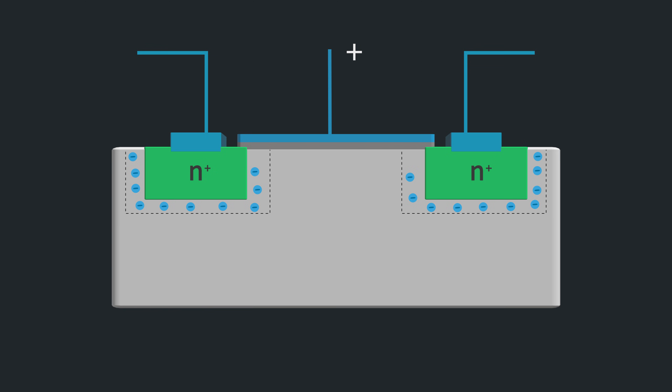If you increase the gate voltage, that positive voltage will repel holes in the substrate away from the area between the source and drain, an area called the channel region, this time a physical region. As the free holes leave the channel, only negative fixed ions are left, creating a depletion region across the entire channel.